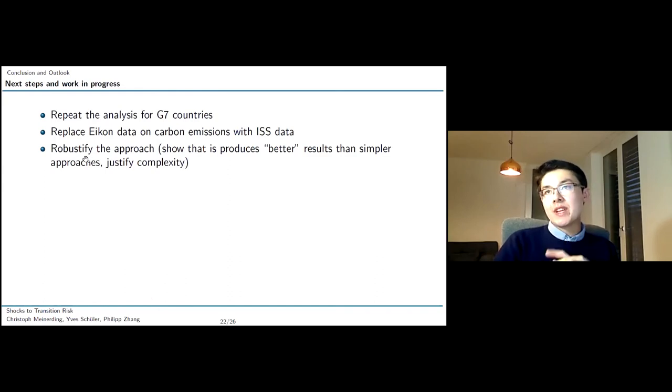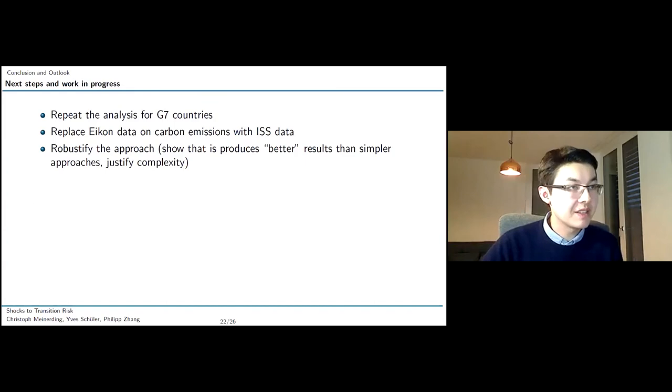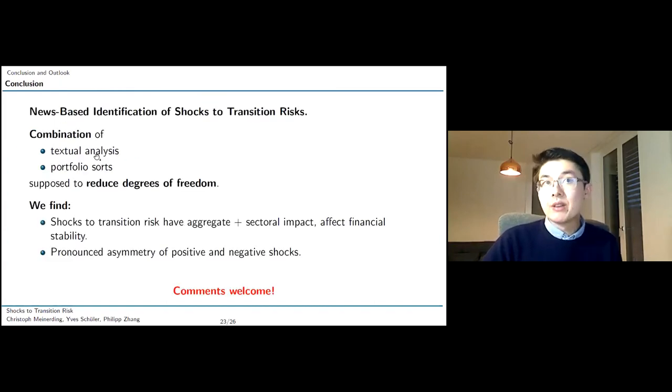Next steps that we want to take: we want to repeat our analysis for the other G7 countries. Because the Bundesbank is doing the seminars also for the Eurozone, so I guess we kind of start with G7. Then we want to replace our ICON data with others and richer data source. We're looking at ISS data. And finally, we'll also want to robustify our approach and especially demonstrate why our combined approach, portfolio sorts plus textural analysis, yields superior results to more simpler approaches using one of those two. In order to justify the complexity of our approach.